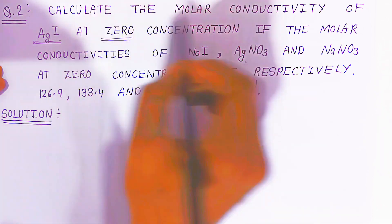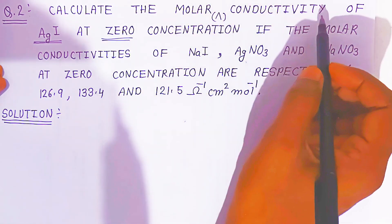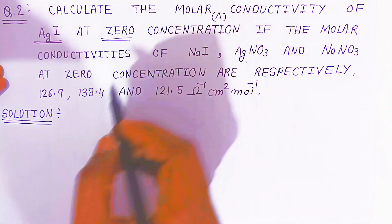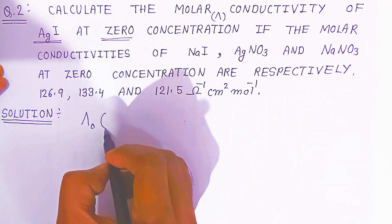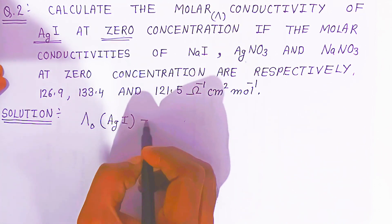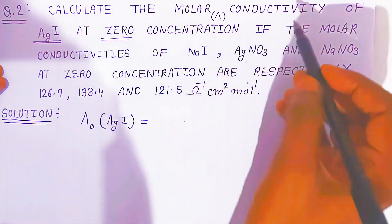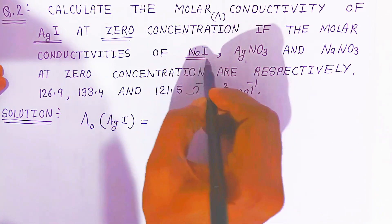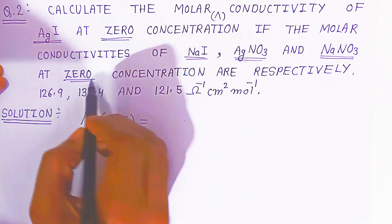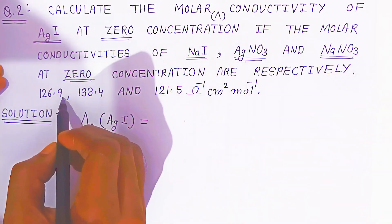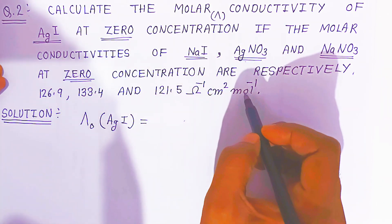We are going to calculate the molar conductivity, which is represented by lambda. Since it is given at zero concentration, we write lambda-zero for silver iodide. The molar conductivity of sodium iodide, silver nitrate, and sodium nitrate at zero concentration are given as 126.9, 133.4, and 121.5 ohm inverse centimeter square per mole, respectively.